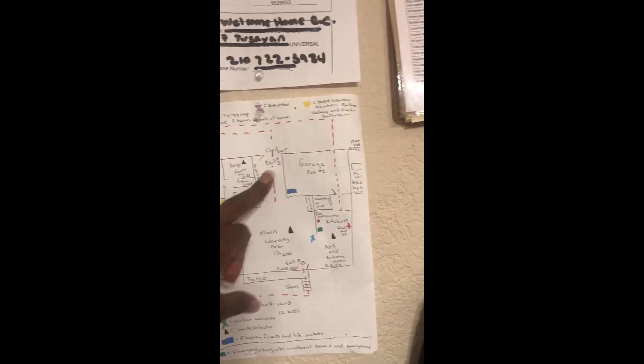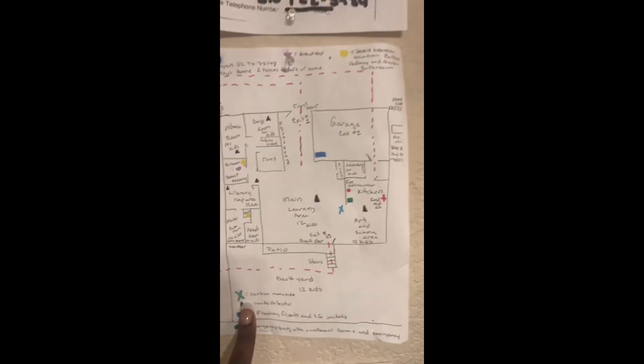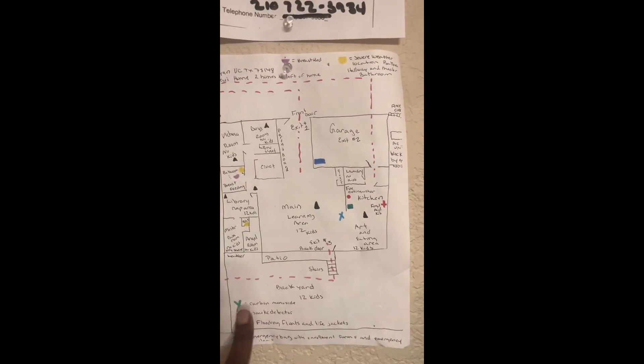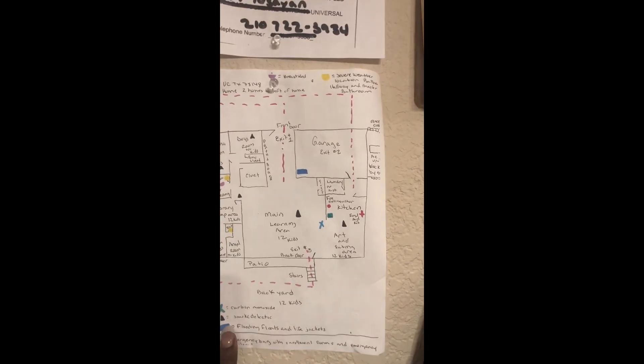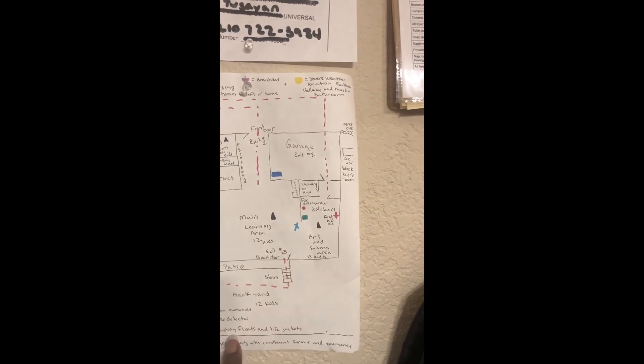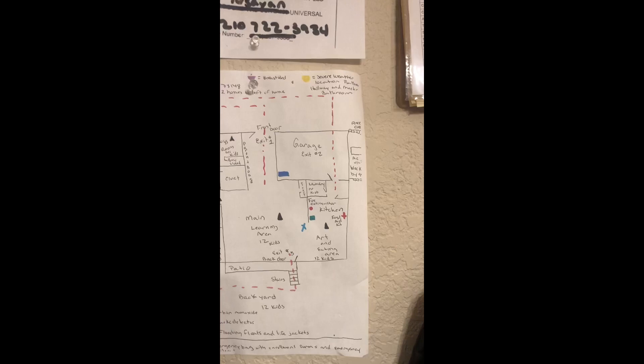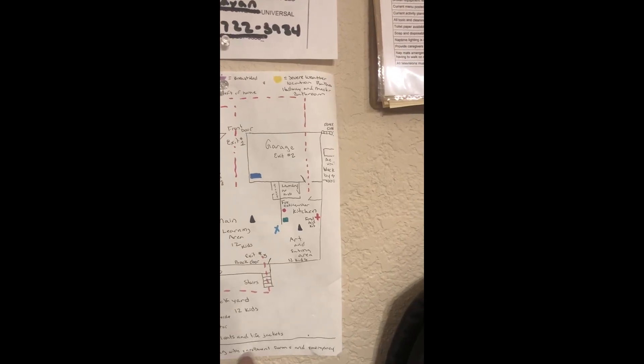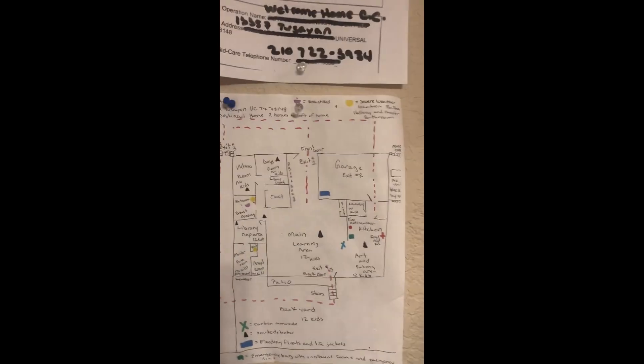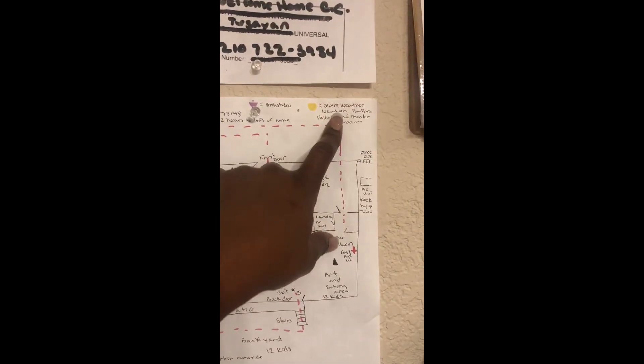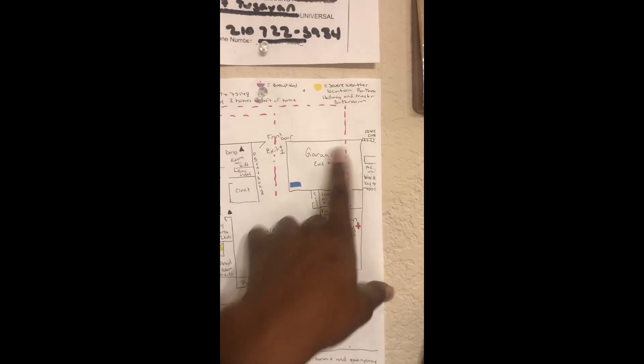If you look, it lets you know like our front door, the back door in the garage. And then down here I actually color coded. So X means carbon monoxide, the triangles are where the smoke detectors are, the rectangles are the floats and life jackets in case there's a flood, and the green square is the emergency bag with the enrollment form which is right here. I use the dots and then I have a yellow circle for the severe weather location, which is the bathroom, hallway, and master bathroom.